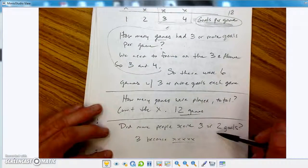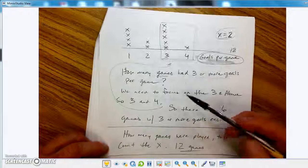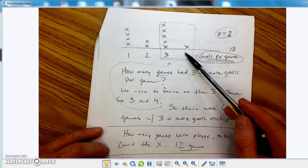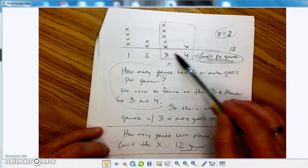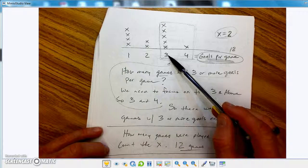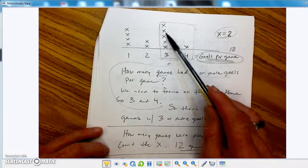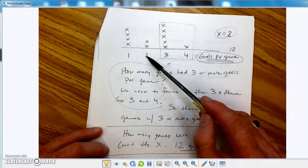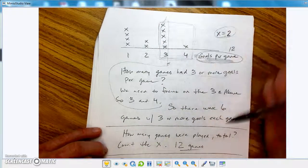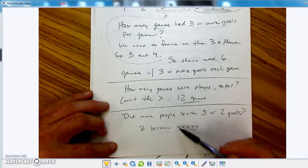But just be careful. They might put, like, you know, each one represents 2 or 3 or 4 or something like that. So there's that. How many games were played total? So what stands for games? The x. So you'd count up all the x's, which ends up being 12. Did more people score 3 or 2 goals? 3 or 2 goals. What does that mean? Goals per game. Did more people score 3? Well, these are goals per game. So goals per game, 3. And you got all those, right? This is goals per game 2. You got those. So who scored more? 3, right there. Get it?